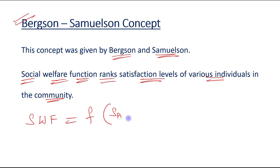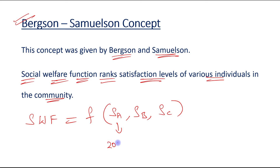For example, suppose there are only three individuals in a society. Individual A's satisfaction level is 20 utils, Individual B's satisfaction is 15 utils, and Individual C's satisfaction is 10 utils.